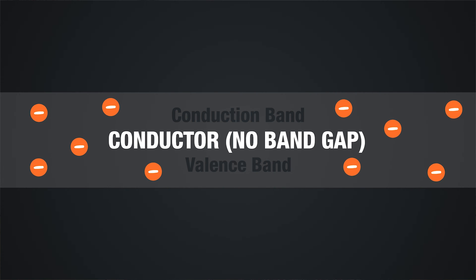In a conductor, like copper, there is no band gap. Actually, the conduction band and valence band overlap, which means the electrons can freely move into the conduction band. This is why you may hear the electrons in metal referred to as a sea of electrons. They're just floating around.